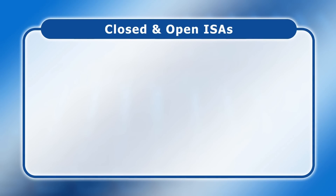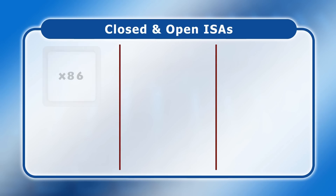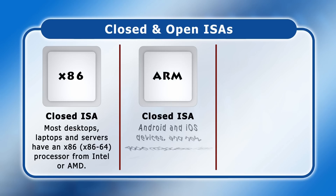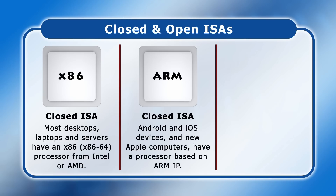To explain RISC-V, it's important to highlight the difference between a closed and an open ISA. Today, practically all end-user and enterprise computing hardware is based on one of two closed instruction set architectures. The first is x86, or technically x86-64, with most desktops, laptops and servers having an x86 processor from Intel or AMD, who each own part of the intellectual property. Meanwhile, today's other dominant ISA is ARM, with practically all Android and iOS devices and new Apple computers having a processor based on ARM intellectual property.